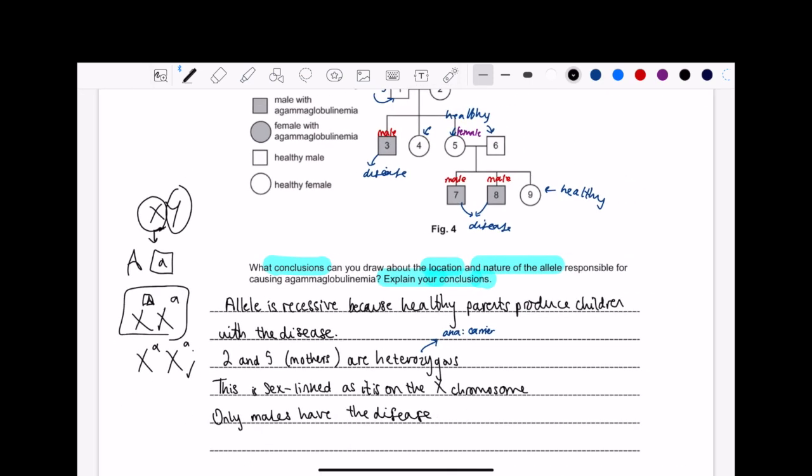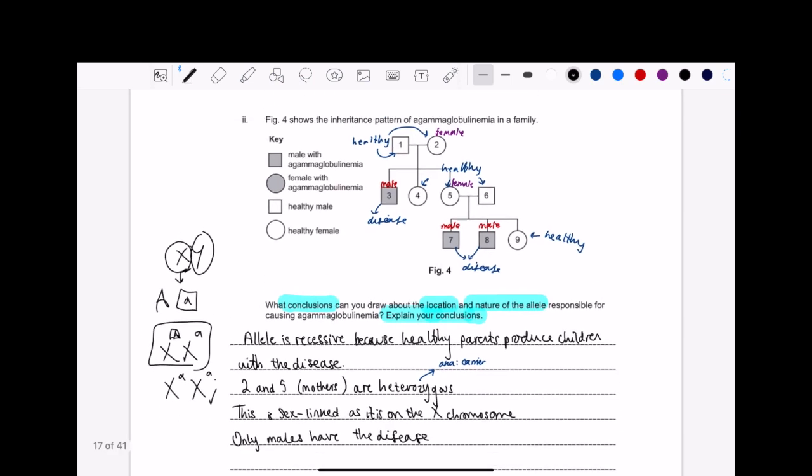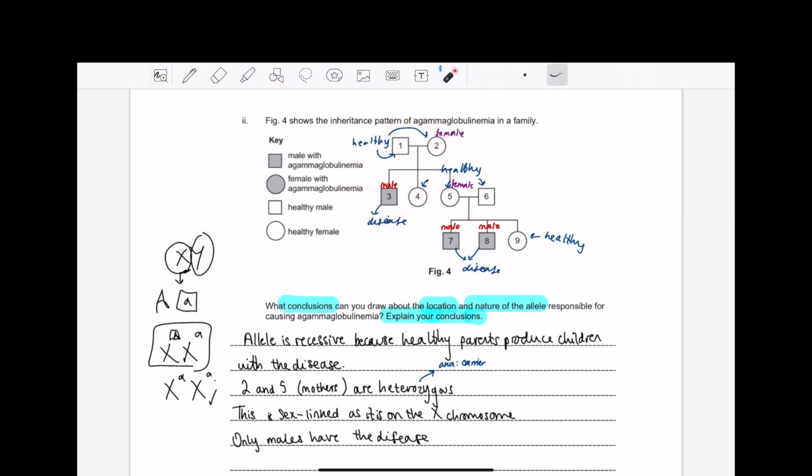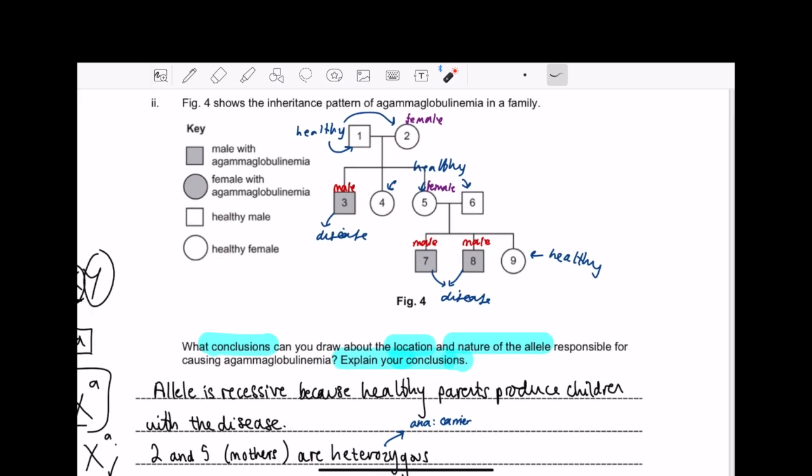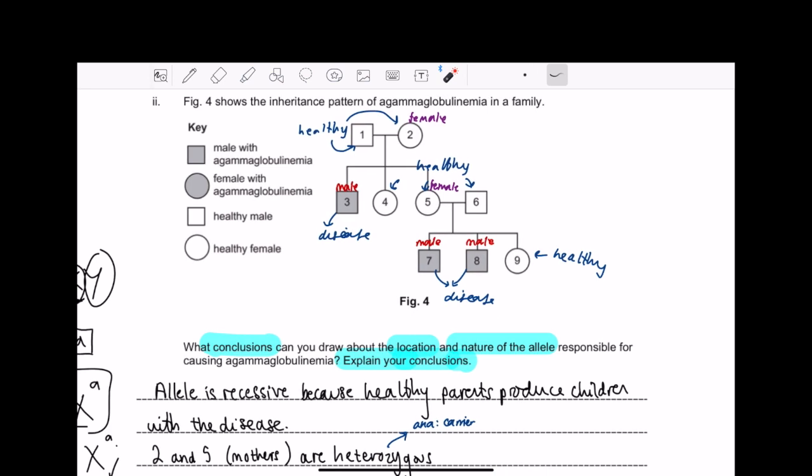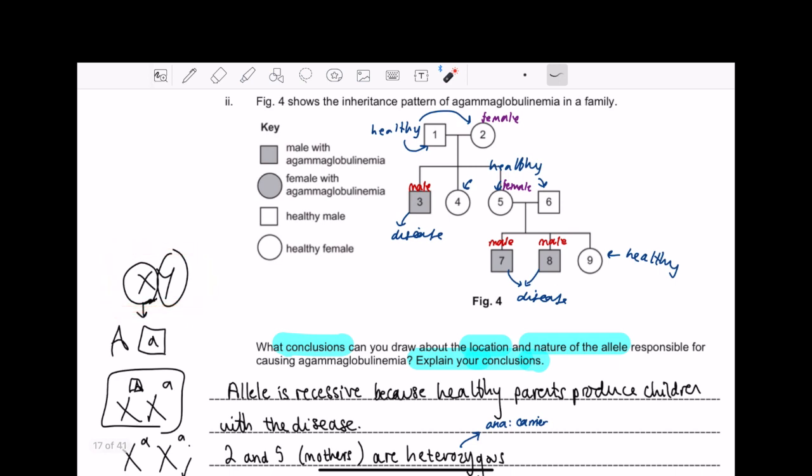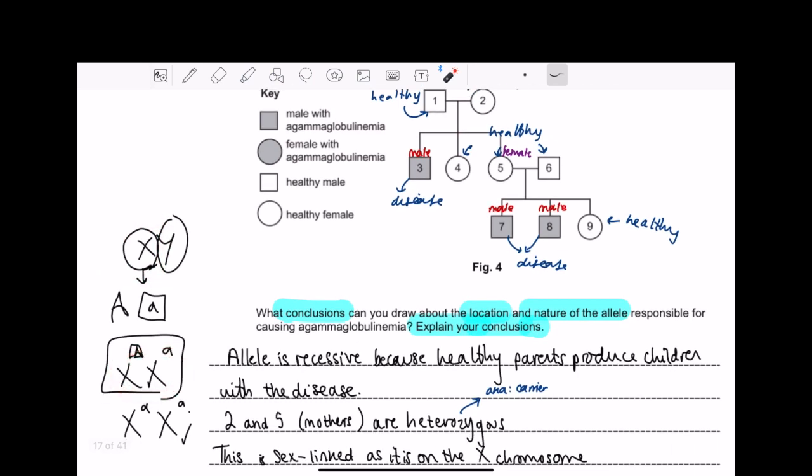So I said the allele is recessive because healthy parents produce children with disease. Then I said two and five, they're both mothers, are heterozygous. What does that mean? They're carriers of it. The thing is, I want this to get into your heads, guys. A man can't be a carrier in this case. Why at all? Because, again, let's go back to the facts. It's X, Y. They can't be a carrier because they can only be affected because they only have one copy of the X chromosome. But with females, they can be carriers and they can be affected. Either one. But men cannot be carriers.